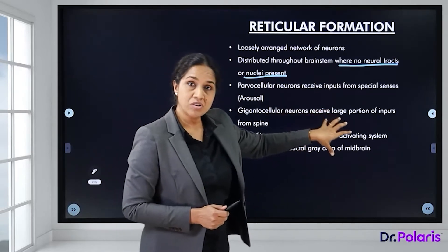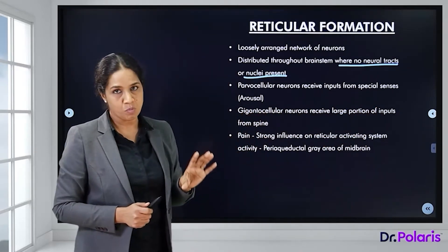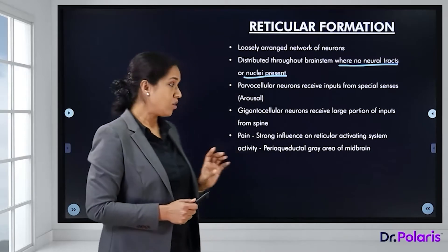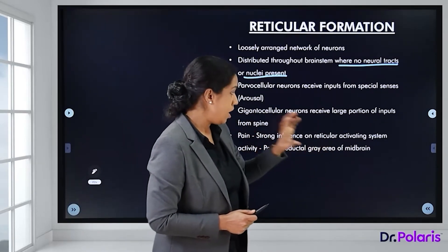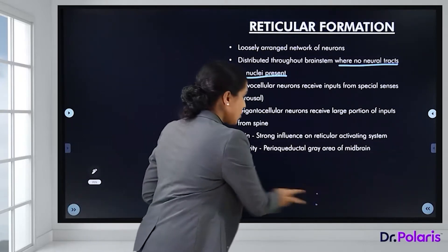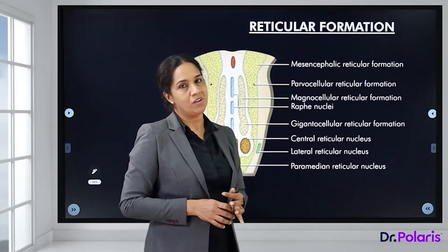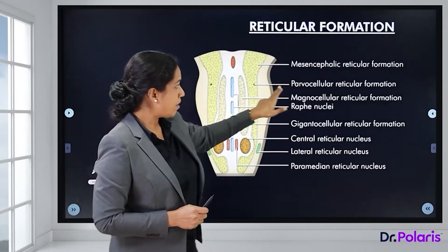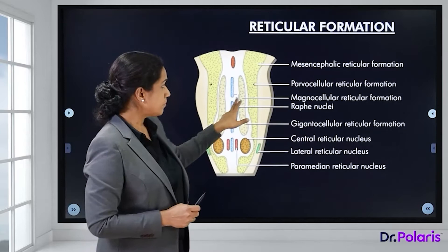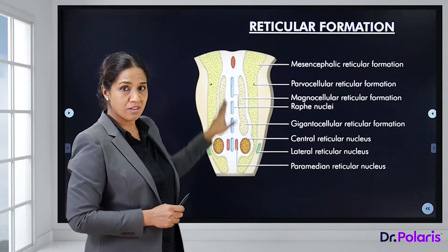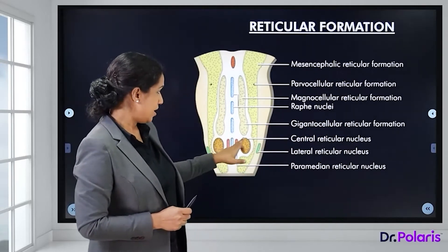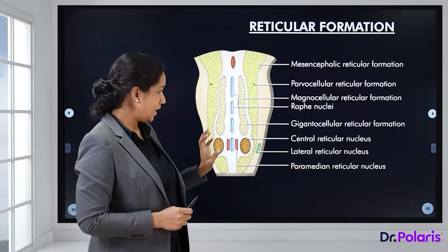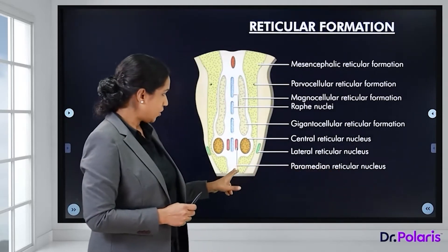The gigantocellular neurons receive major inputs from the spinal cord, and pain exerts a strong influence on the reticular activating system through collaterals to the periaqueductal gray of the midbrain — that's why pain modulation is an important function of the reticular formation. The divisions include the mesencephalic, parvocellular, magnocellular, gigantocellular, central, lateral, and paramedian reticular formations, as well as the raphe nucleus.